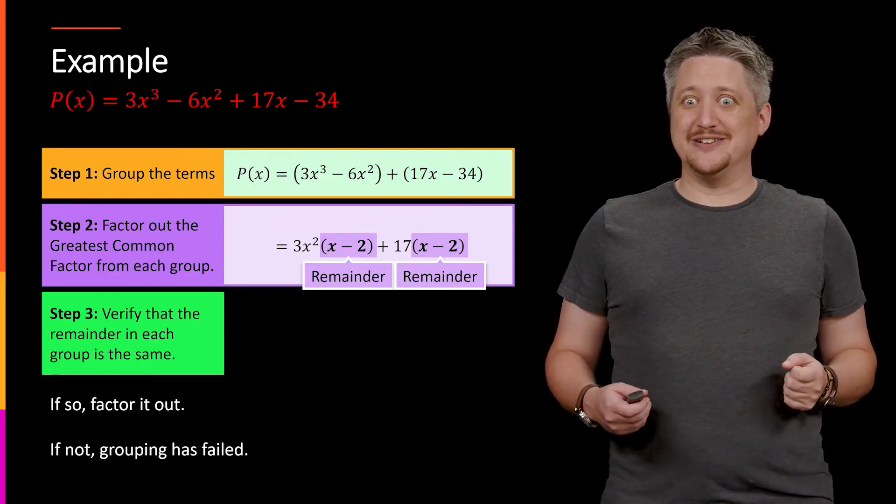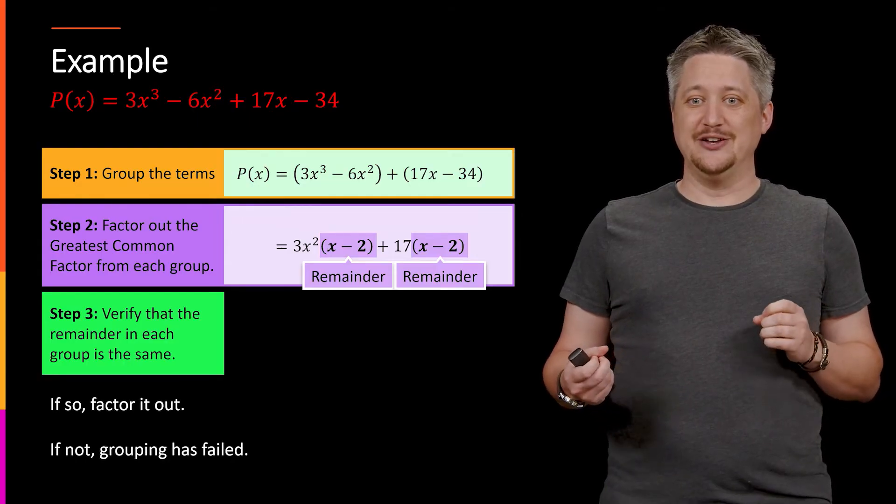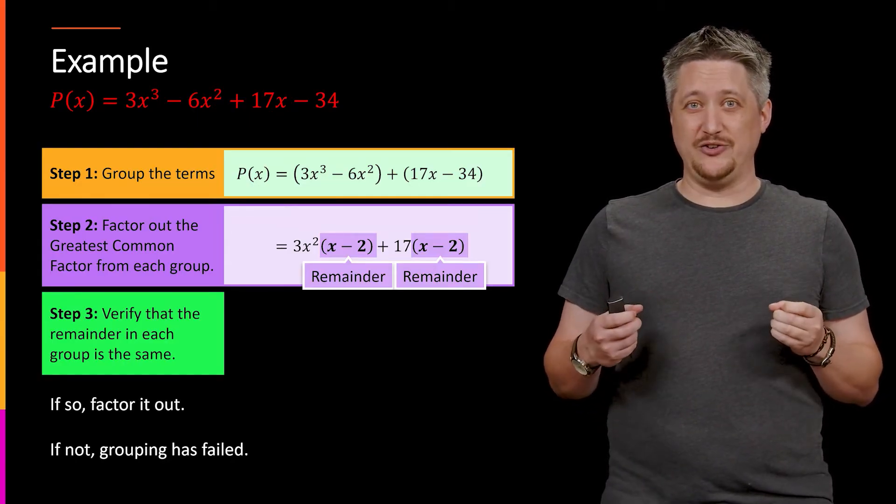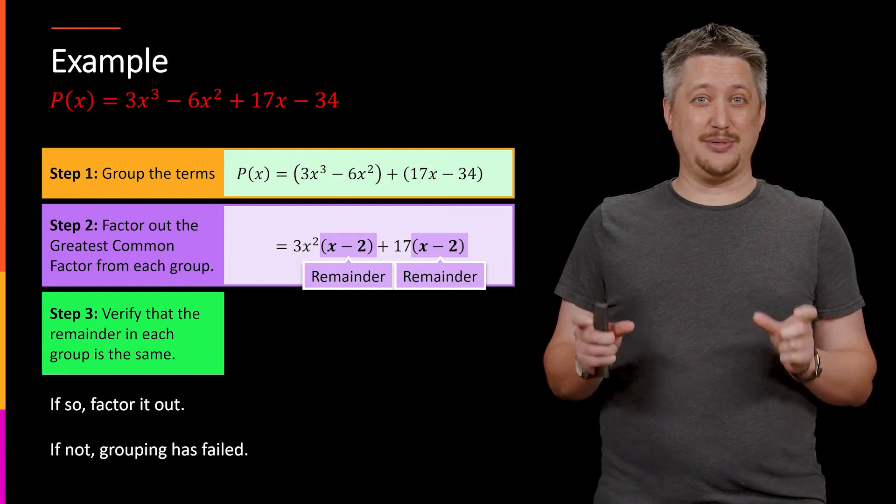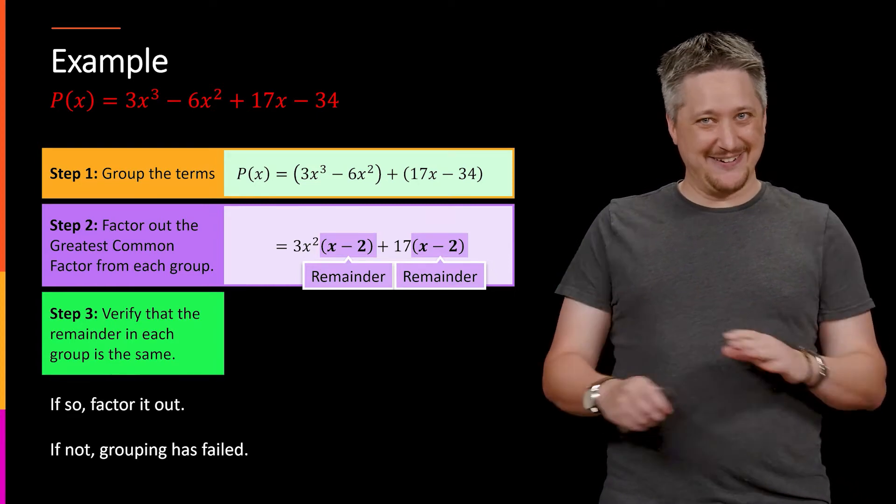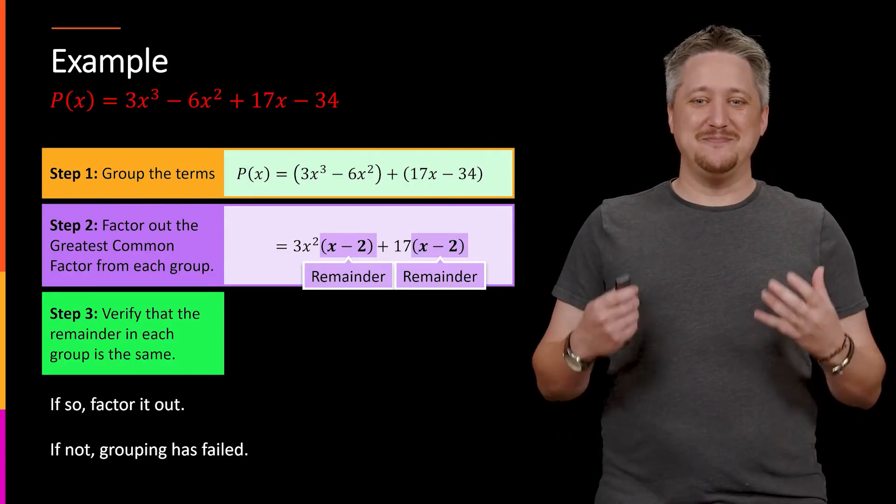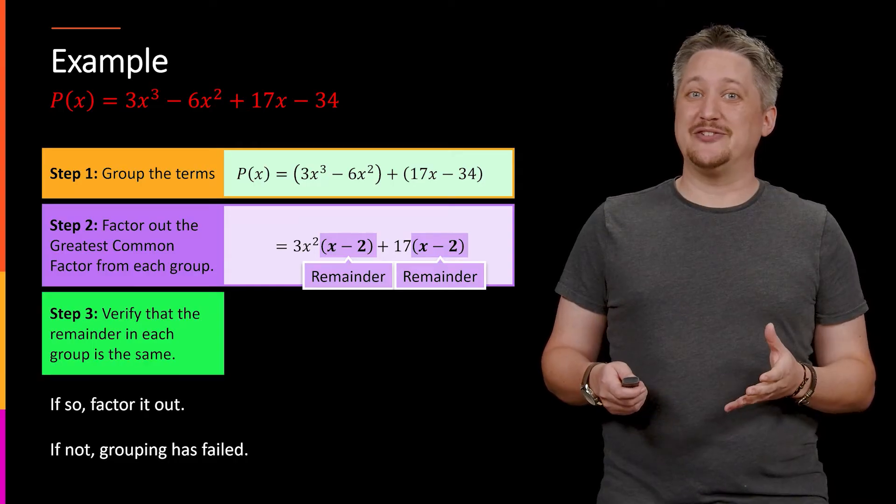Beating a dead horse here because this is the number one place where students go wrong. They just do the grouping and assume it worked and don't actually check that these are the same thing. And if you proceed when they aren't the same thing, you are guaranteed to get a wrong answer. You can't ever get the right answer. So very clear. We want those remainders to be the same.